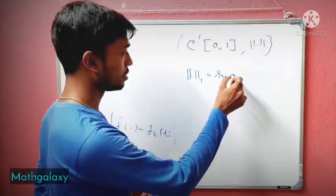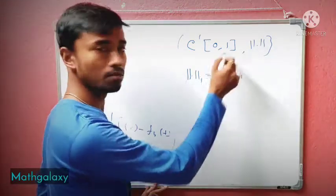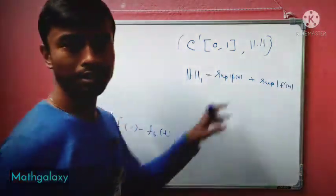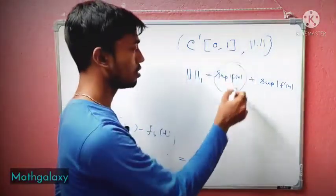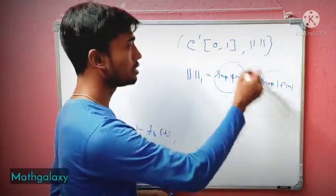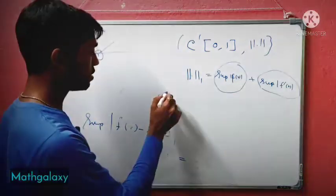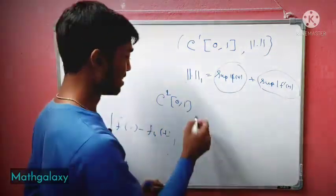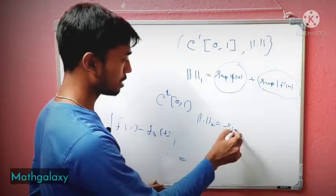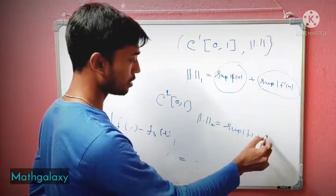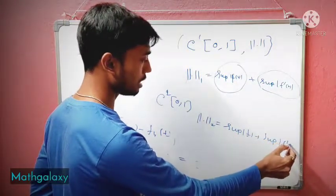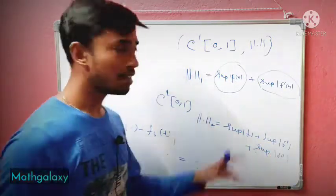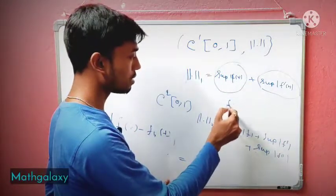The Sobolev norm for C¹[0,1] is defined as the sup norm of f(x) plus the sup norm of f'(x). This is a two-part method: one part for C[0,1] and one for C¹[0,1]. For C²[0,1] it can be extended: take the sup of f plus the sup of f' plus the sup of f''.